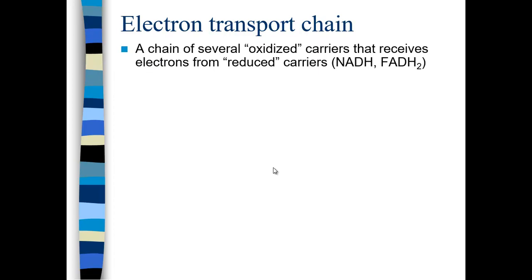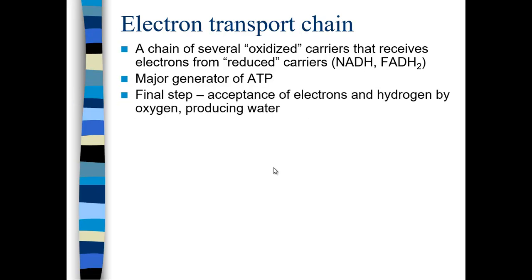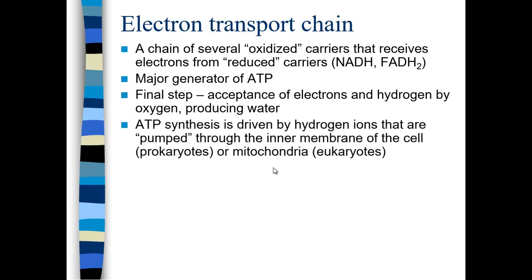In the electron transport chain, oxidized carriers receive electrons from reduced carriers. This is where the majority of ATP is formed for aerobic respiration — for every molecule of glucose, you get 34 molecules of ATP. The final step of the electron transport chain is the acceptance of electrons and hydrogen by oxygen. The electrons and hydrogen reduce oxygen to form water. ATP synthesis is driven by hydrogen ions pumped through the inner membrane of the cell or the inner membrane of the mitochondria, depending on whether it's prokaryotic or eukaryotic. This pump drives the synthesis of ATP, like a hydroelectric pump.